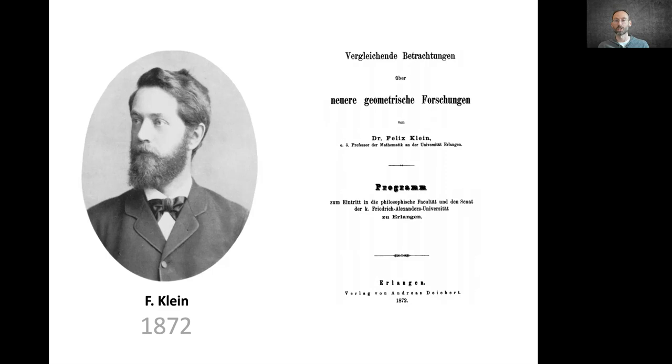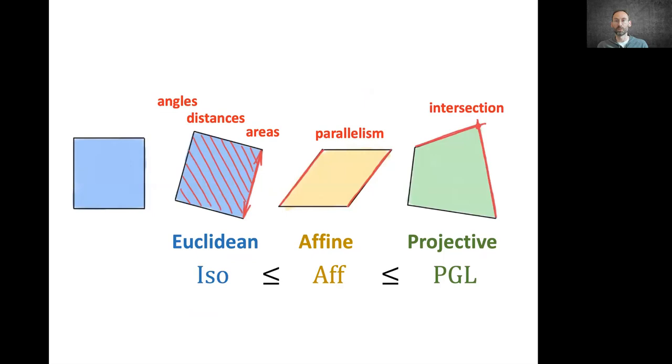These are the properties that remain unchanged under some class of transformations that were formalized using the language of group theory, which gave immediate clarity on which geometry is more general because this can be understood as the relation between the respective groups.